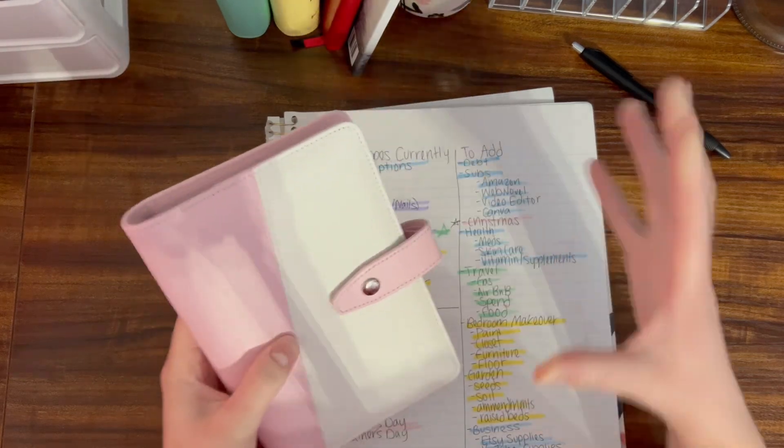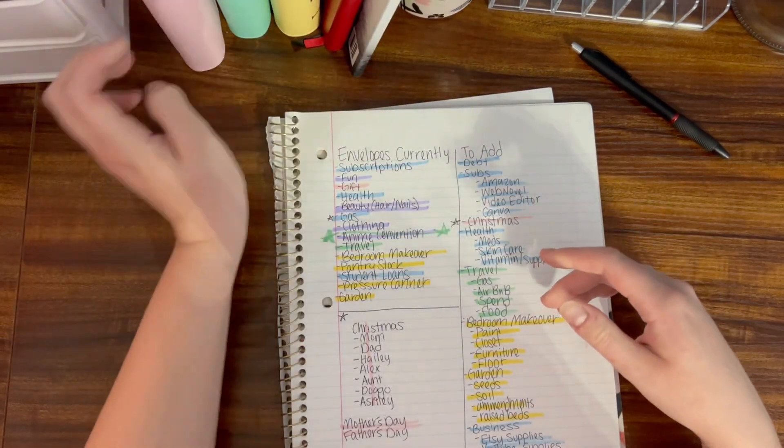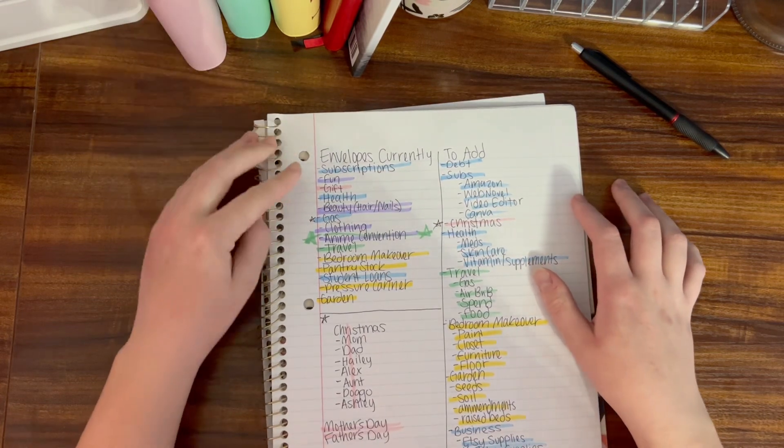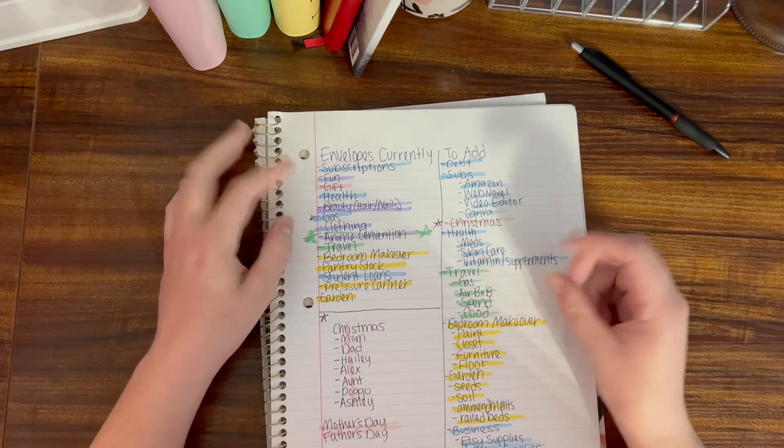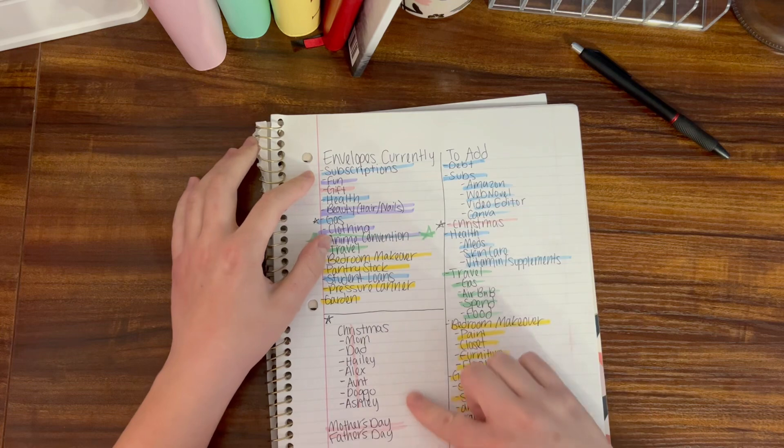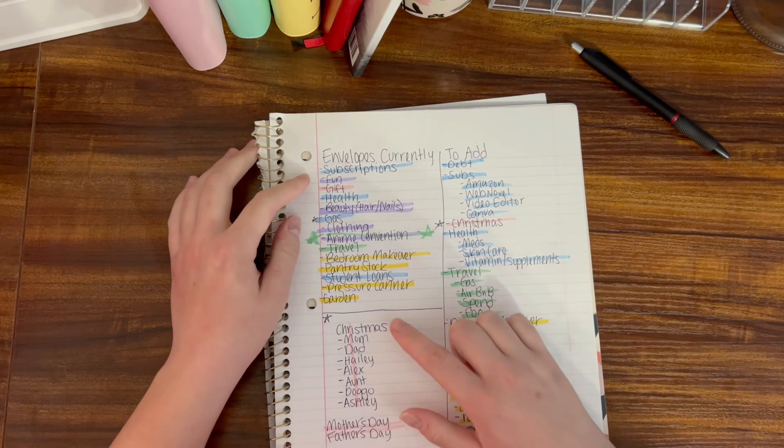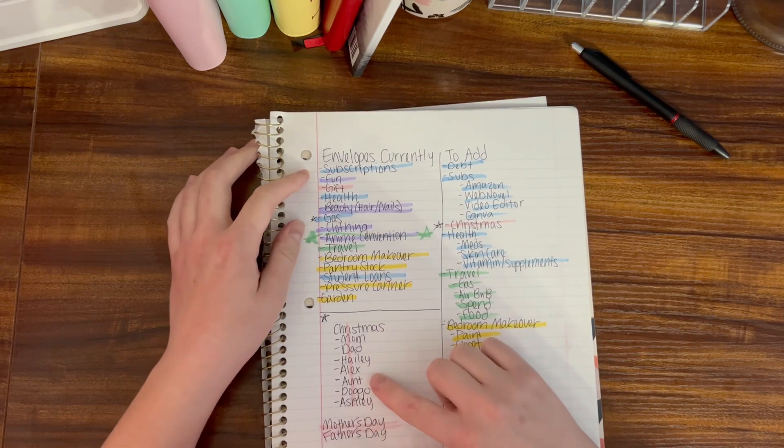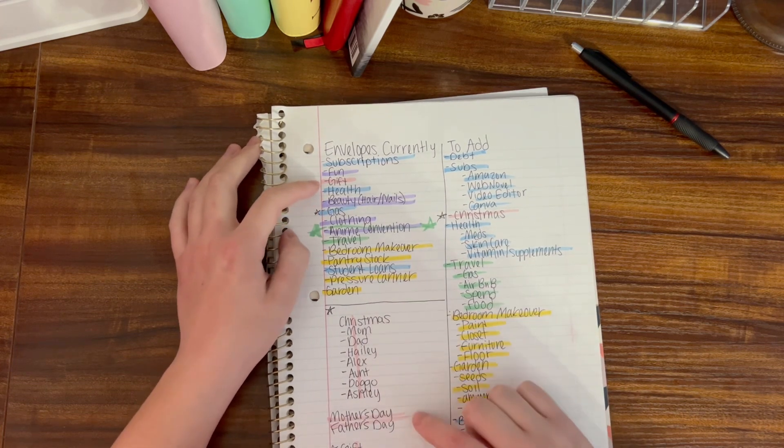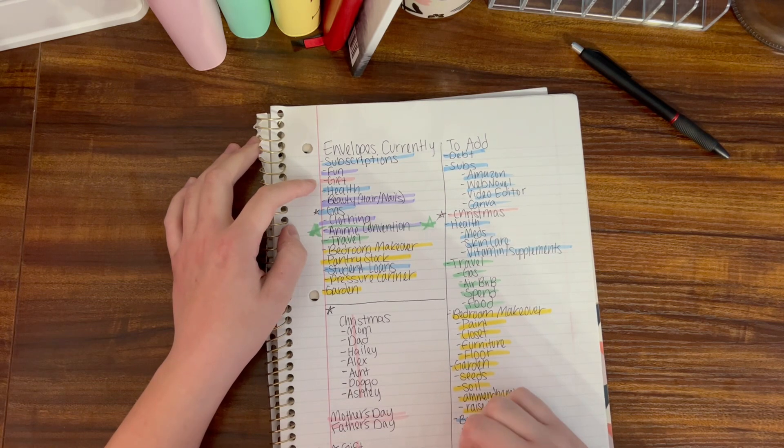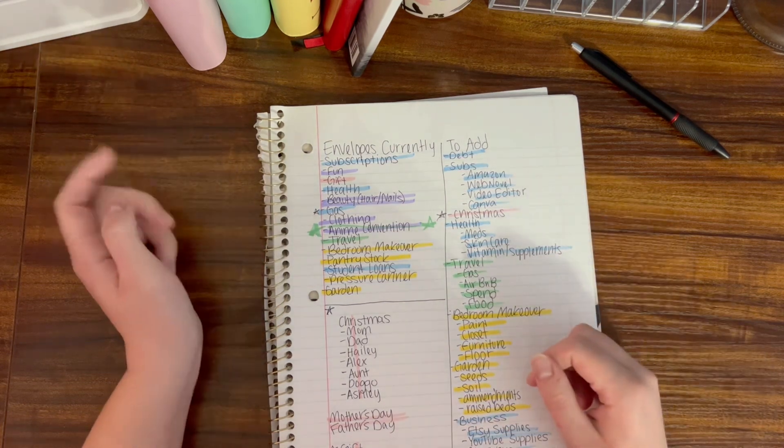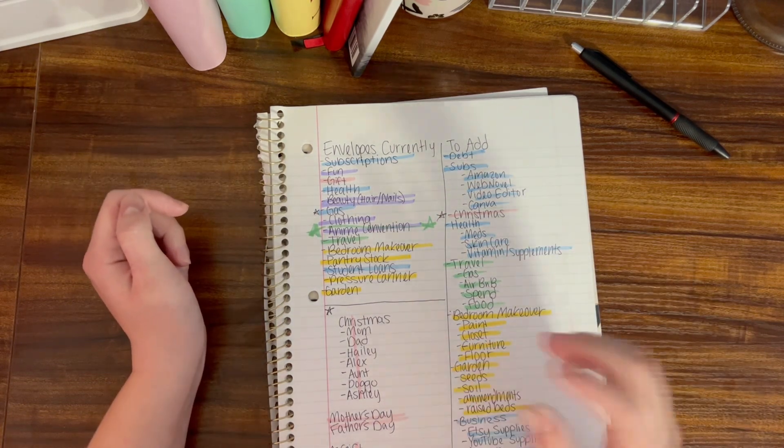For the pink binder, the envelopes I'm looking to have are gift, so kind of like my gift buying envelope. I'll have Christmas and then divide it into different categories by person. I want gift divided into different birthdays. I'll have Mother's and Father's Day. That's usually what I do - gifts, birthdays, Mother's and Father's Day, and then Christmas.